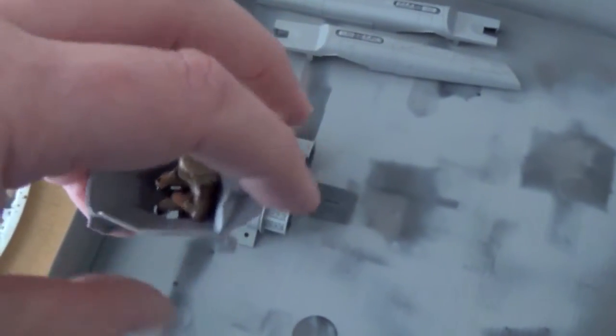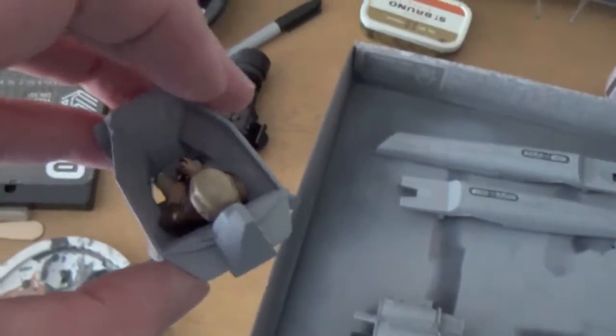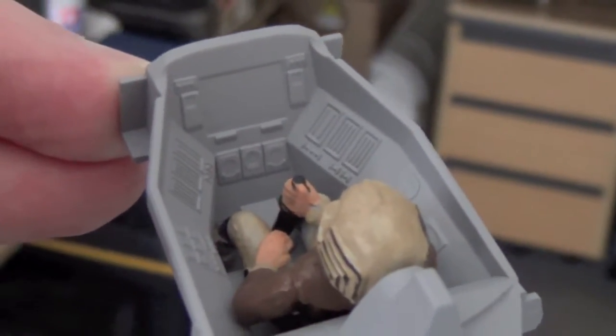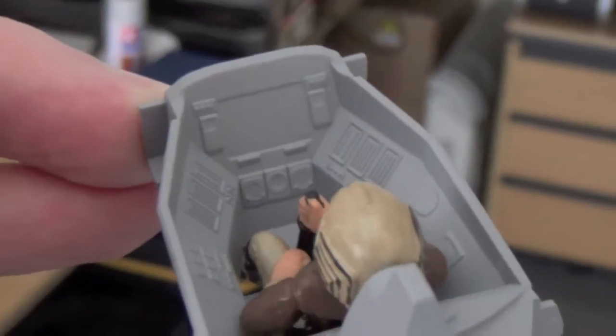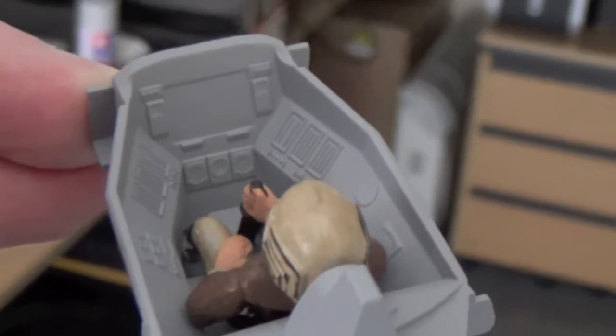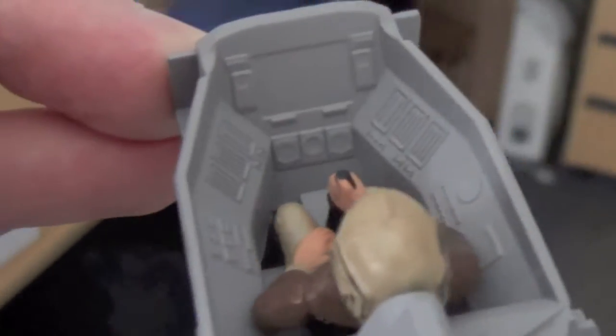Now, a question here for you, Stuart. I've got an option here. There's quite a bit of detail in that cockpit. We've got a screen, which we can cut that out and put something behind with a little decal that comes in the kit, and then we've got all the other controls.